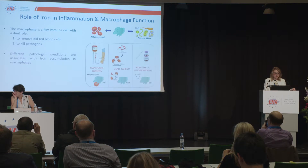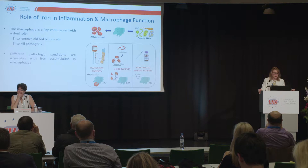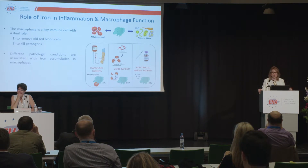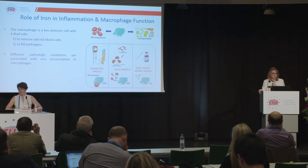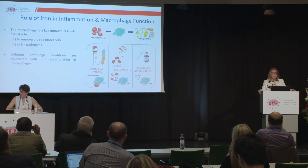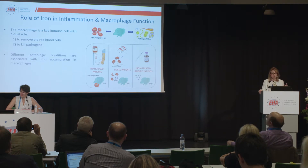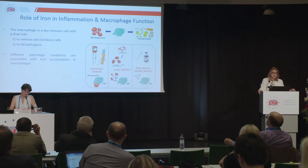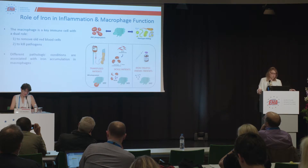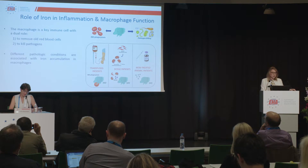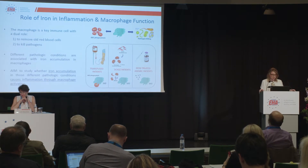Several pathologic conditions show iron overload in the macrophage. One example is anemic conditions such as thalassemia and myelodysplastic syndrome, where anemia is treated through transfusion, which produces an enhanced rate of phagocytosis through the macrophage, causing iron overload. Additionally, in sickle cell disease, the hemolysis of sickle red blood cells leads to heme releasing into the circulation and accumulating in the macrophage. Also, in anemia treated with intravenous iron formulation, this iron firstly targets the macrophage. We were interested to study how iron accumulation in these different pathologic conditions causes inflammation through the activation of the macrophage.